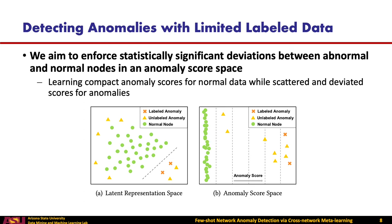To enable anomaly detection on an arbitrary network with limited label data, we first propose a new family of graph networks called Graph Deviation Networks. The high-level idea is to enforce statistically significant deviations between abnormal and normal nodes in an anomaly score space. As shown in the left figure, since anomalies usually have distinct patterns, existing methods may easily fail to distinguish them from normal nodes in the latent representation space with only few labeled anomalies. But in this work, by learning compact anomaly scores for normal data while scattered and deviated scores for anomalies, they can be well separated in an anomaly space, as shown in the right figure.